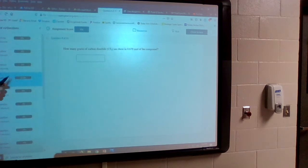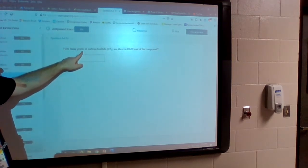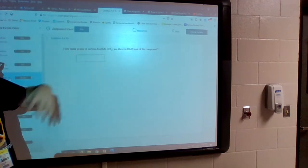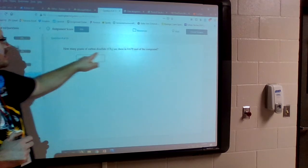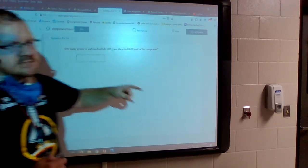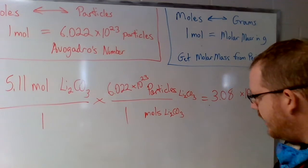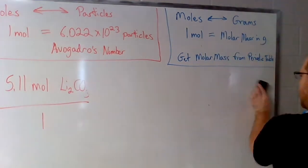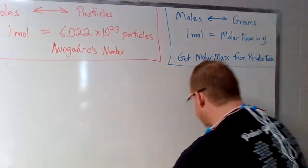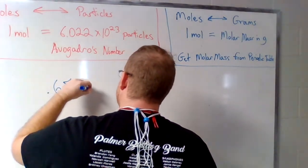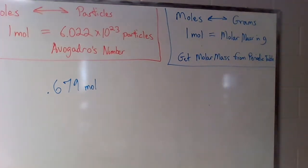Number four wants to know how many grams of carbon disulfide are in 0.679 moles of the compound. So instead of going from moles to particles, we're going from moles to grams. They give me moles and ask me for grams. When I come back to the board, I'm going to use the moles-to-grams approach, which means I need to use the molar mass for that chemical.